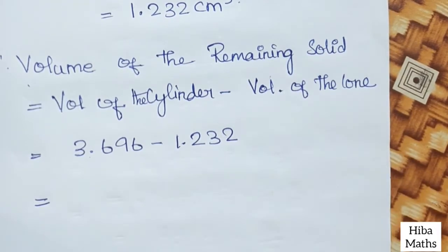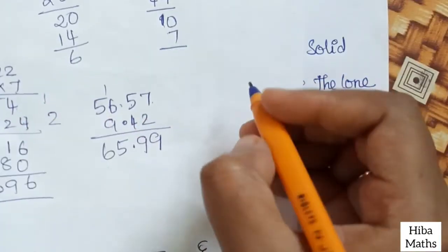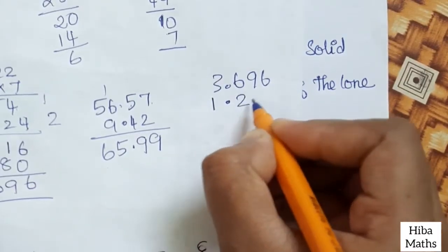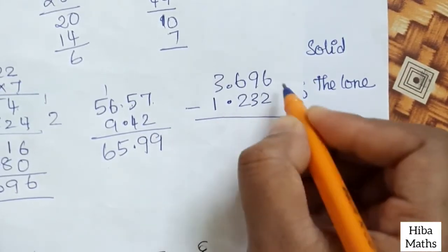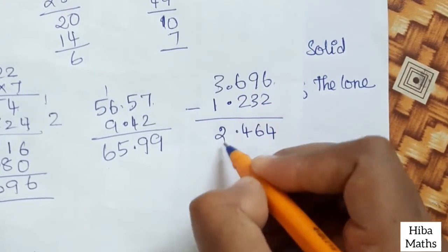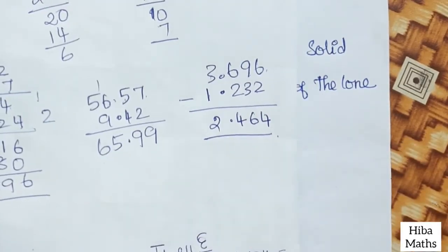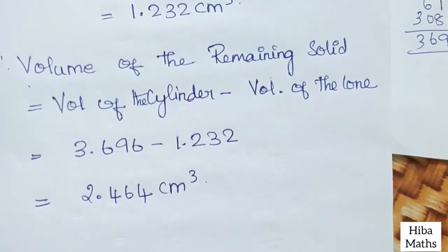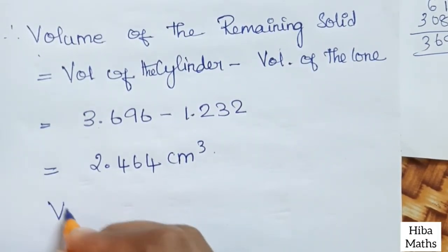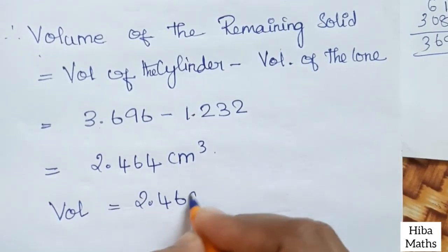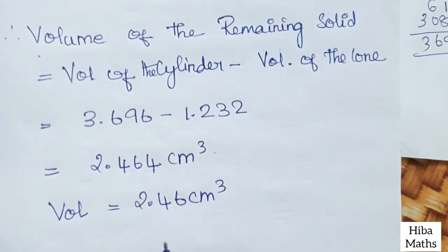3.696 minus 1.232 equals 2.464 cm³. The final answer is 2.46 cm³.